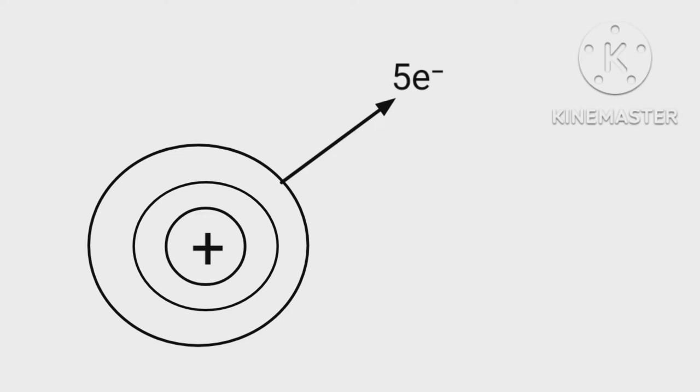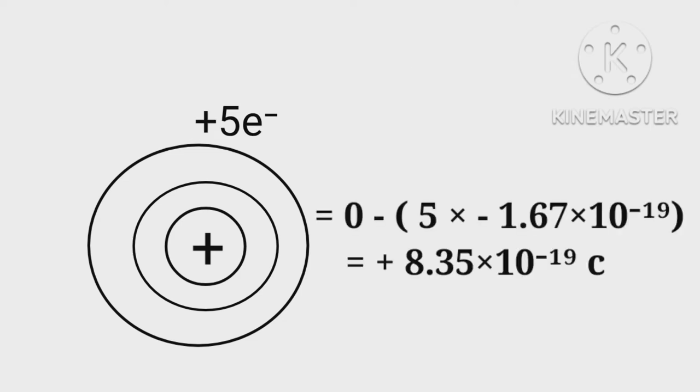Loosening of five electrons makes the surface electropositive. Hence, charge on the surface = 0 - 5 × (-1.67×10⁻¹⁹) = +8.35×10⁻¹⁹ coulombs.